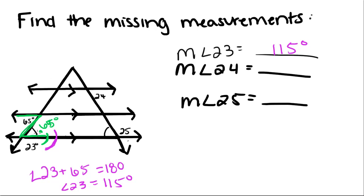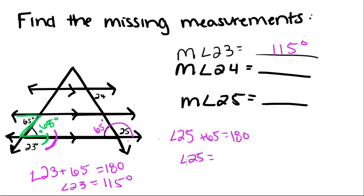If you notice these marks right here, this means that these two angles are congruent, so this has to equal 65 as well. This angle and this angle are also supplementary, so we're going to do the same thing to angle 25: angle 25 plus 65 equals 180, so angle 25 also has to equal 115 degrees.